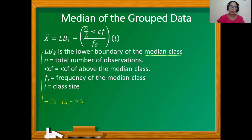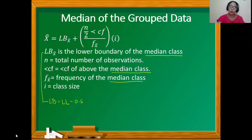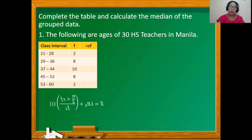n in the formula is the total number of observations. We're going to have a less-than cf column for the grouped data to calculate the median. The less-than cf in the formula refers to the less-than cf above the median class. f sub x is the frequency of the median class, and i is the class size or class width.